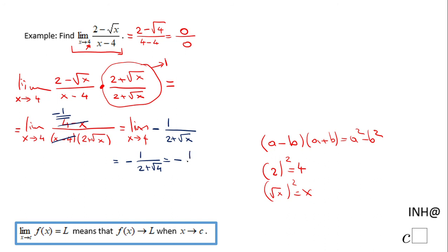This limit—limit when x approaches 4 of (2 - √x)/(x - 4)—is -1/4.